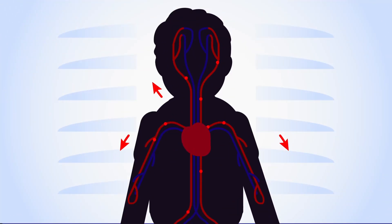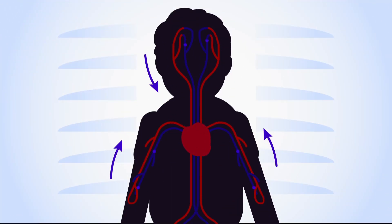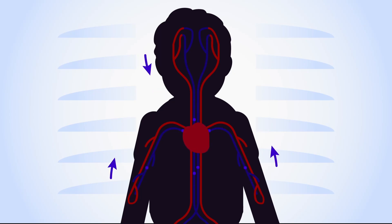Arteries transport blood from the heart to organs. Then, the blood is transported back from organs to the heart by veins.